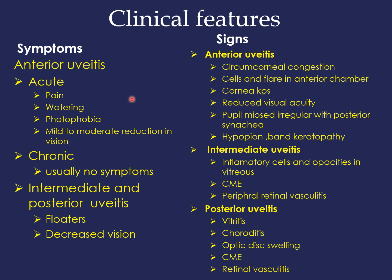The clinical features of uveitis depend on the site of uveal involvement. In anterior uveitis, patients may complain of pain or discomfort, watering, photophobia, and mild to moderate blurring of vision. In chronic uveitis, the patient may be asymptomatic until complications such as cataract or band keratopathy develop. In intermediate and posterior uveitis, patients complain of floaters secondary to vitreous opacities and significant visual loss due to retinal involvement or associated macular edema.